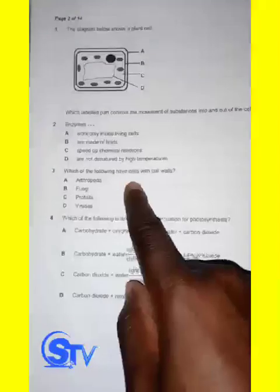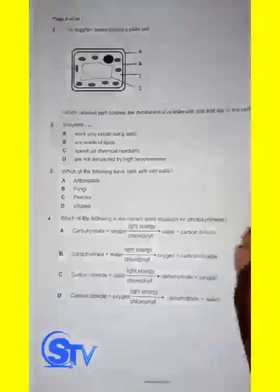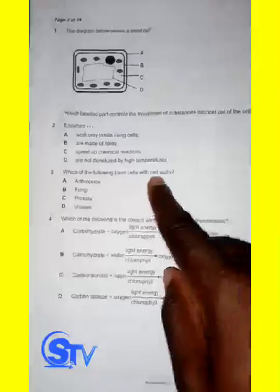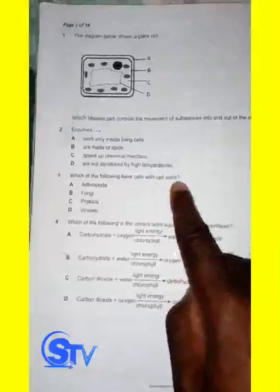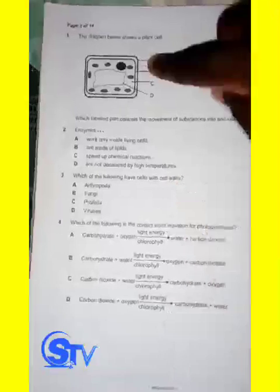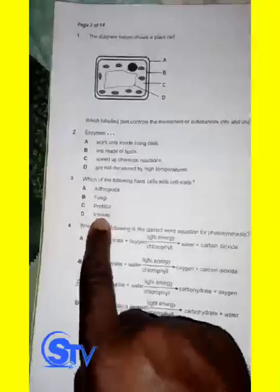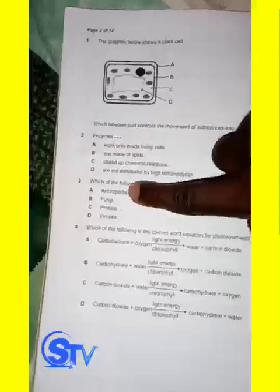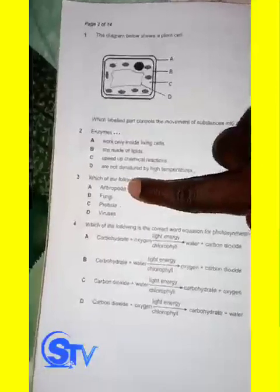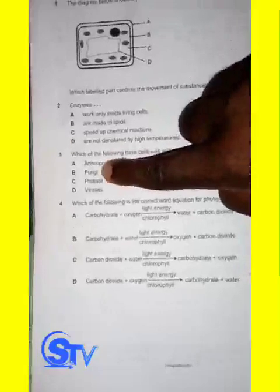Which of the following have cells with cell walls? Cell walls are associated with plant cells. Is a virus a plant cell? Definitely no. Is an Arthropoda a plant cell? Definitely no. What about fungi? Definitely no. But Protista is the best answer.